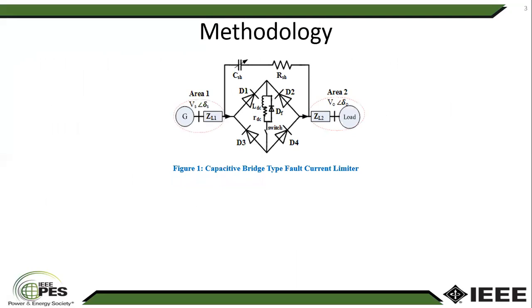This is the structure of the capacitive bridge type fault current limiter. There are two particular parts. The first part is the bridge part which conducts during normal operation of the power system. There is a switch which is a power electronic based switch and there is a shunt path which has a shunt resistance and variable capacitance. They conduct or limit the flow of high current when there is any disturbance or fault into the power grid.